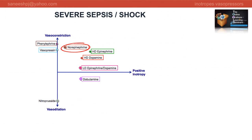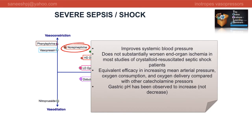What does norepinephrine do? It has prominent alpha-1 adrenergic action. It improves systemic vascular resistance and systemic blood pressure. Norepinephrine does not substantially worsen end-organ ischemia. It shows efficacy in raising mean arterial pressure, oxygen consumption, and oxygen delivery. It also has the added advantage of increasing gastric pH. Hence, the Surviving Sepsis Campaign designates norepinephrine as the first-choice vasopressor.